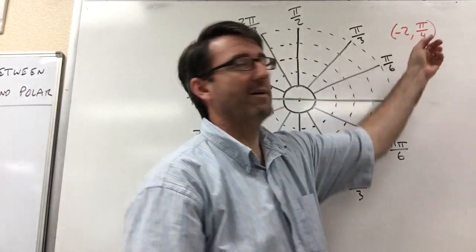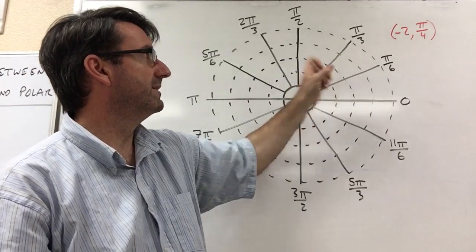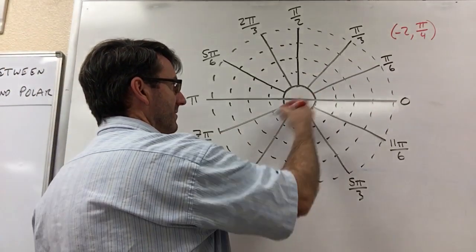And now when we have a negative radius, that means instead of going out in that direction, 2, we're going away from that direction, we're going back this way,